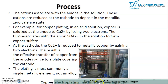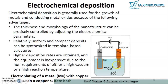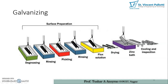This is the standard copper electroplating machine for layering PCBs as shown in this diagram. Electrochemical deposition is generally used for growth of metals and conducting metal oxides due to the following advantages: the thickness and morphology of the nanostructure can be precisely controlled by adjusting electrochemical parameters; relatively uniform and compact deposition can be synthesized in template-based structures; higher deposition rates are obtained; and the equipment is inexpensive as neither a high vacuum nor a high reaction temperature is required — just an electric supply and one solvent solution.